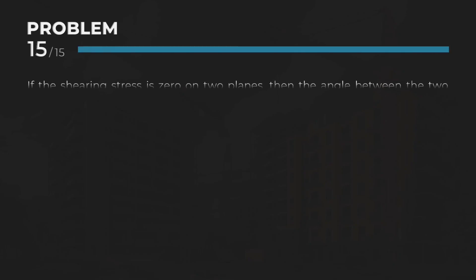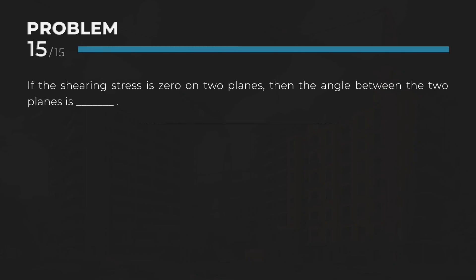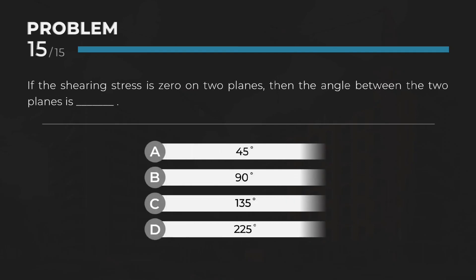If the shearing stress is zero on two planes, then the angle between the two planes is — Answer: B. 90 degrees.